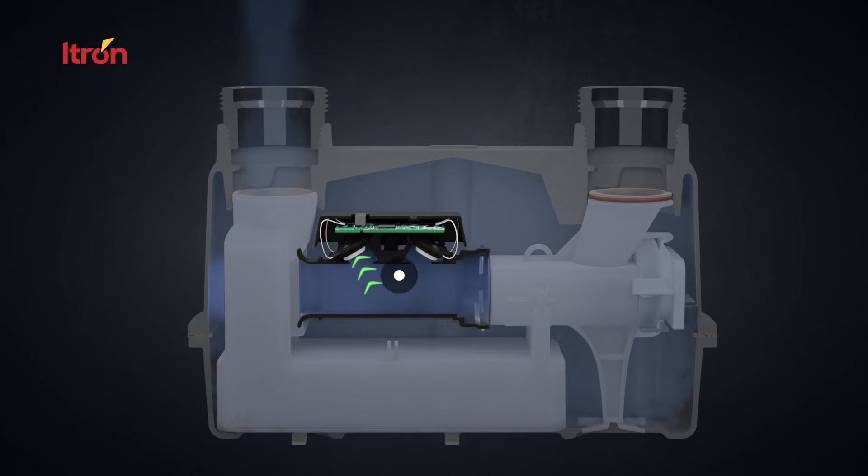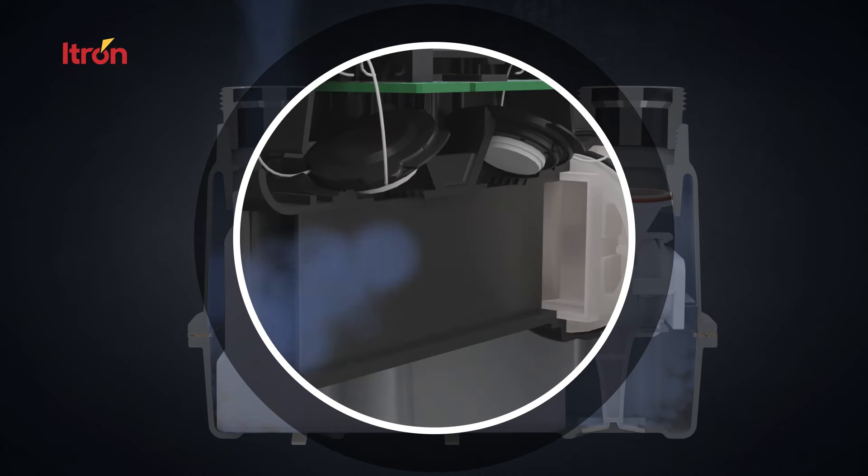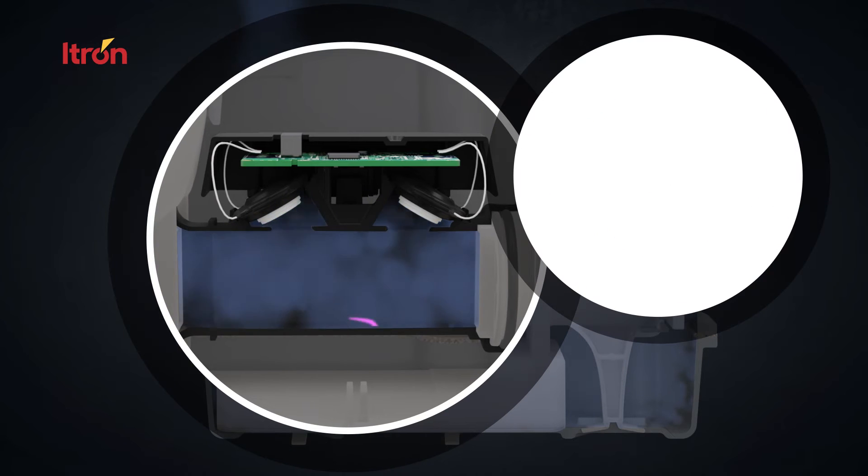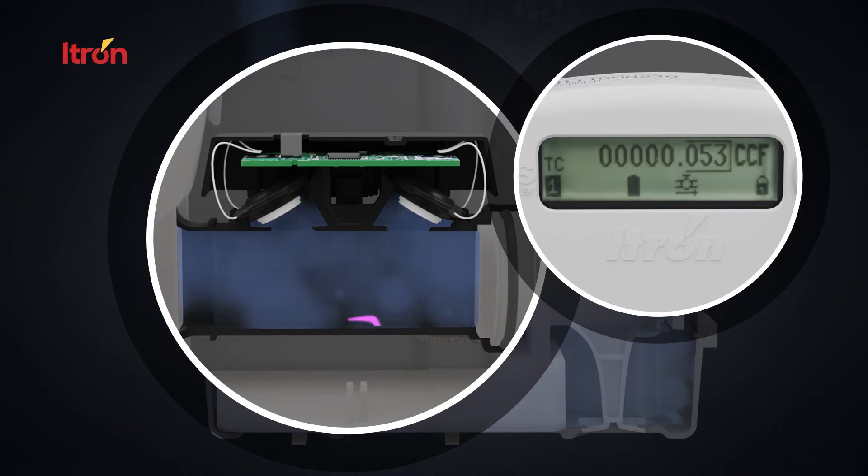INTELIS uses time-of-flight measurement principle utilizing two ultrasonic transducers. A signal is sent from the upstream transducer to the downstream transducer and then in reverse. The time to go from upstream to downstream indicated by the purple arrows is faster than the reverse shown in green. The time difference between both directions is used to determine volume.